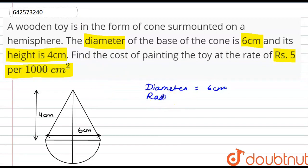So the radius will be d by 2, that is 6 by 2, which equals 3 cm. And we are given the height of the cone is 4 cm.